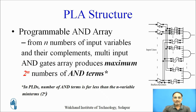The Programmable AND array accepts N number of inputs and their complements, and multi-input AND gates are used to produce, at most, 2-to-the-N number of AND terms. But in PLDs, the number of these AND terms is far less than the N-variable minterms, that is 2-to-the-N. You can go through the specification of any PLD available in the market to understand how many AND terms are possible.